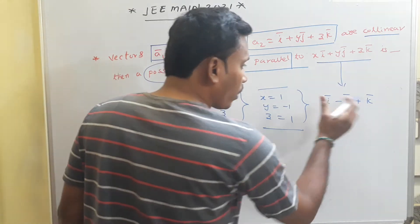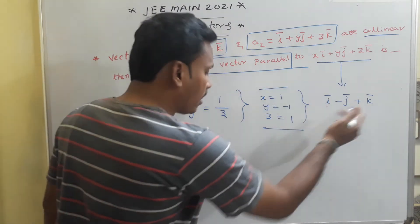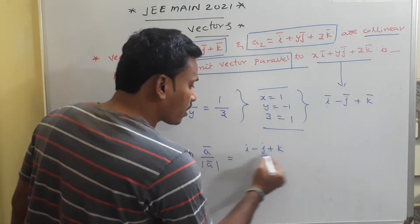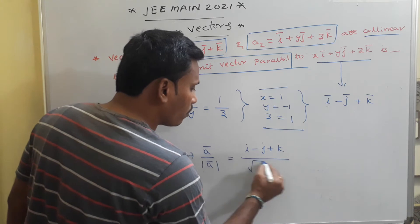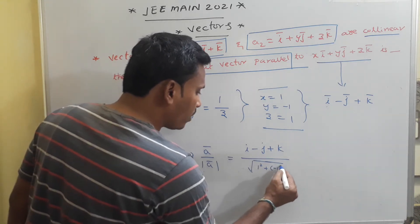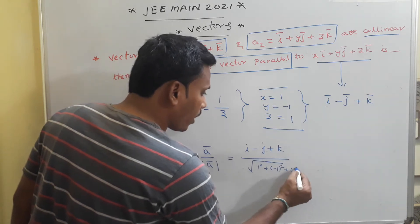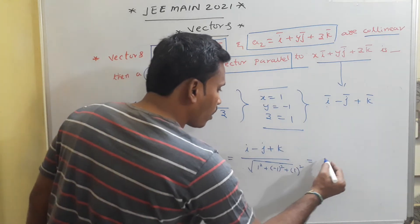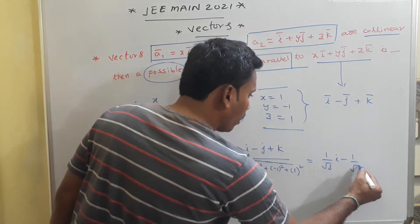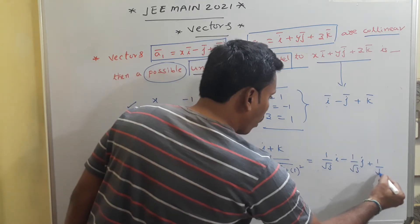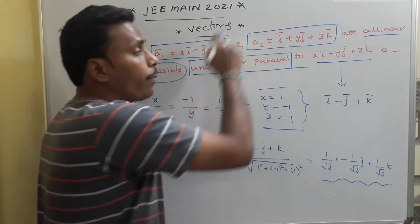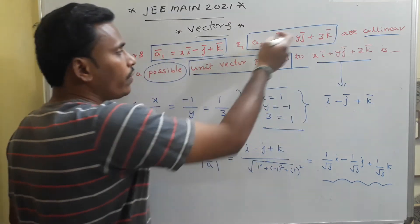Here we find the unit vector parallel to i − j + k. This is (i − j + k) divided by the modulus, which is √(1² + (−1)² + 1²) = √3. So the unit vector is (1/√3)i − (1/√3)j + (1/√3)k. This is the possible unit vector parallel to the given vector when the two vectors are collinear.